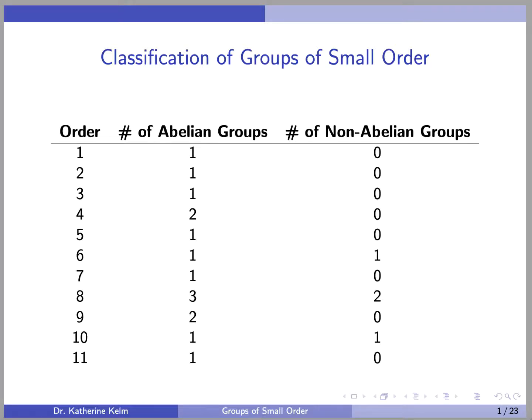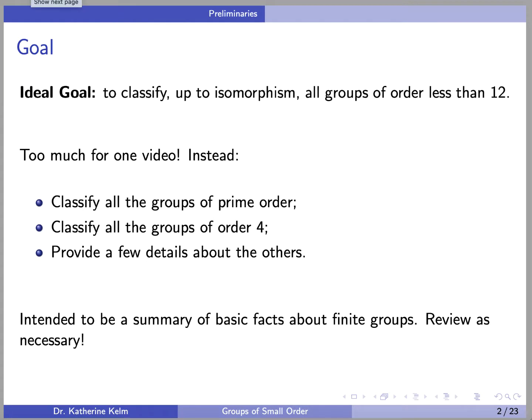This video is about the classification of groups of small order, namely the groups of order less than or equal to 11. Ideally our goal would be to classify up to isomorphism all groups of order less than 12, but that's a little too much for one video. Instead, we're going to classify all the groups of prime order, classify all the groups of order 4, and provide a few details about the others.